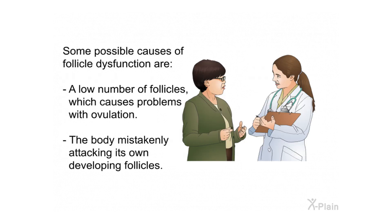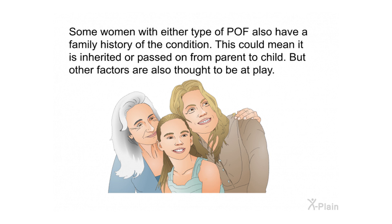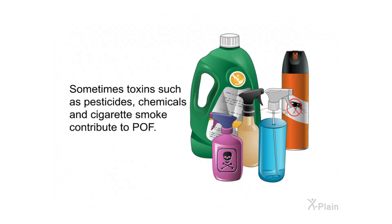Possible causes of follicle dysfunction include a low number of follicles causing problems with ovulation, and the body mistakenly attacking its own developing follicles. Some women with either type of POF also have a family history of the condition, suggesting it may be inherited. Other factors such as toxins like pesticides, chemicals, and cigarette smoke are also thought to contribute to POF.